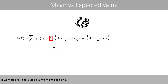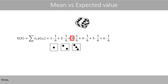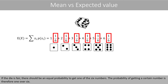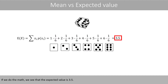If we roll a six-sided die, we might get a 1, 2, 3, 4, 5, or a 6. If the die is fair, there should be an equal probability to get one of the six numbers. The probability of getting a certain number is therefore 1 over 6. If we do the math, we see that the expected value is 3.5.